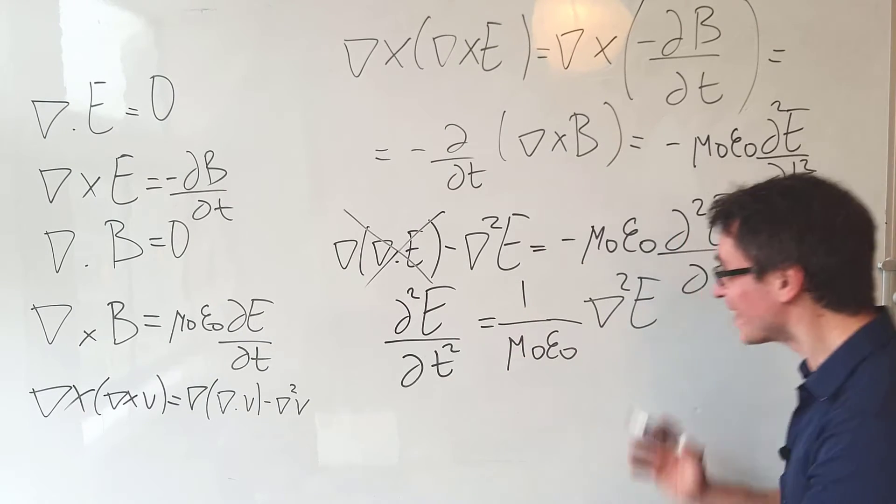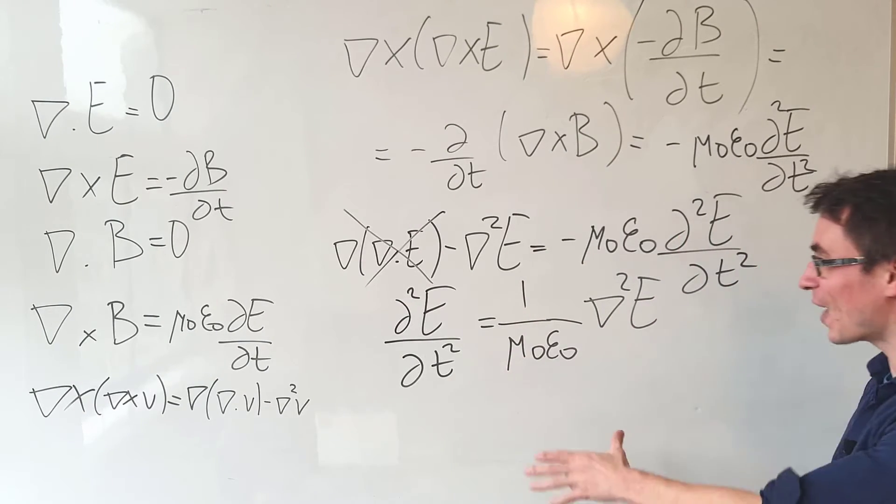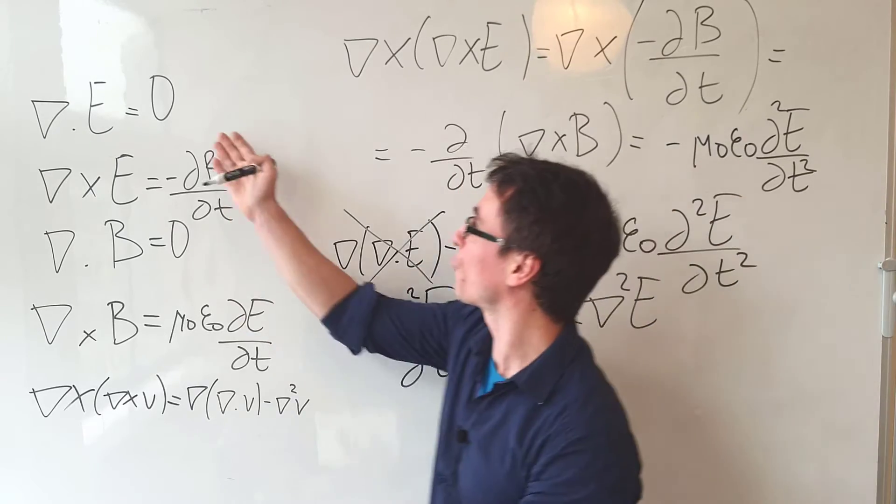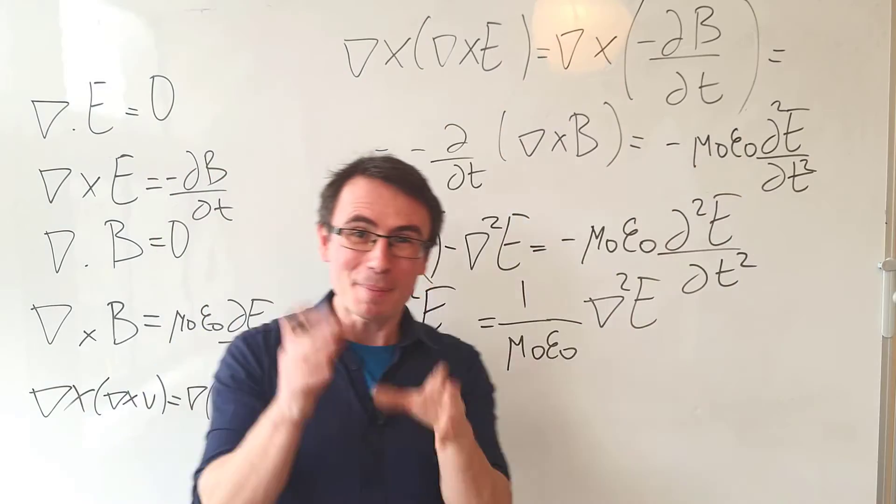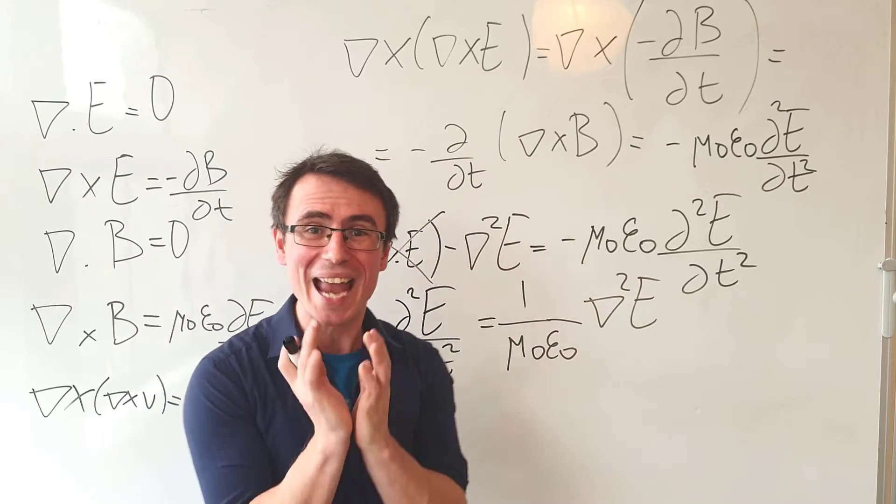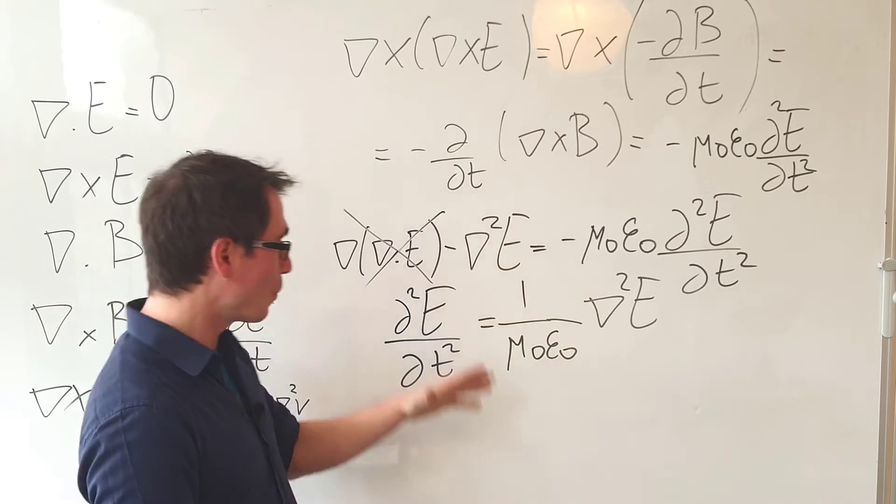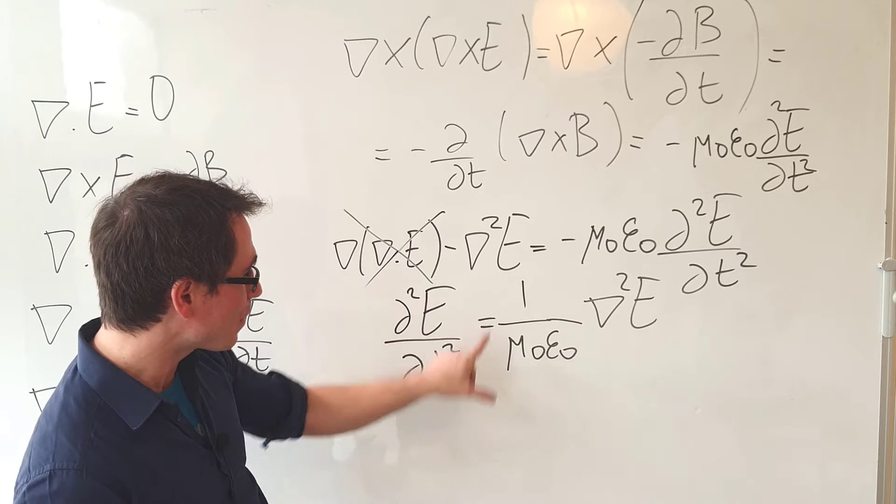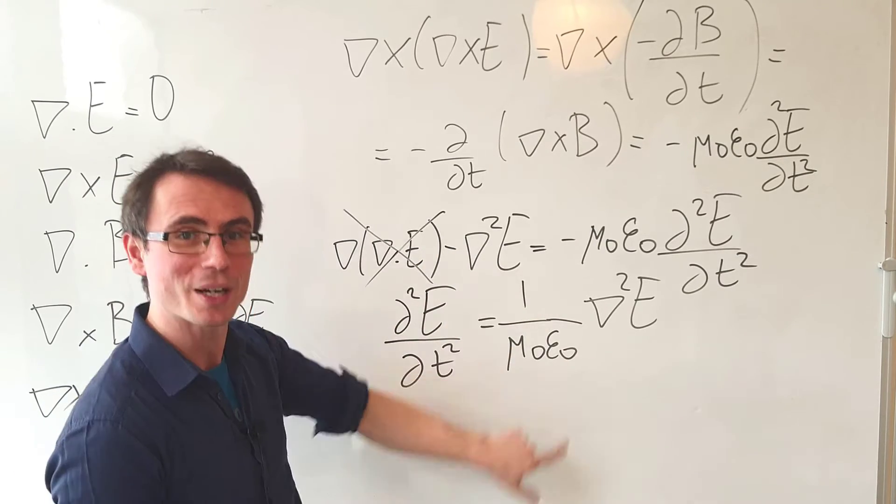And this right here is actually the equation of a traveling wave through a vacuum. It means that electromagnetic waves can propagate through a vacuum in the absence of charge with a speed given by the square root of this expression.